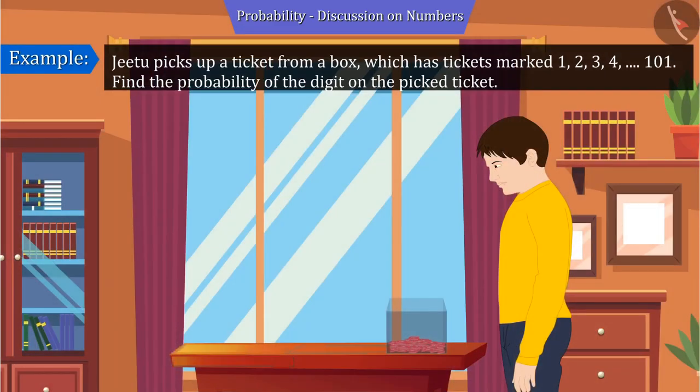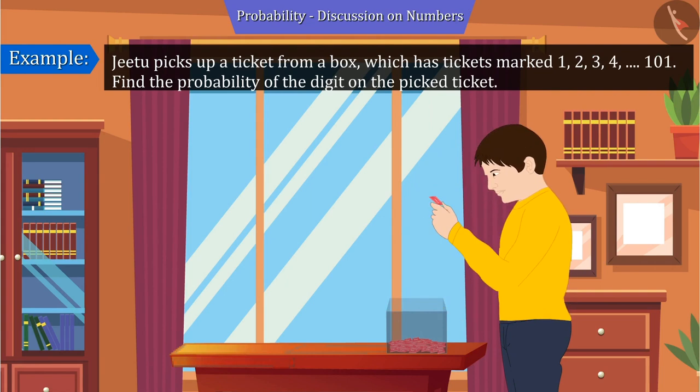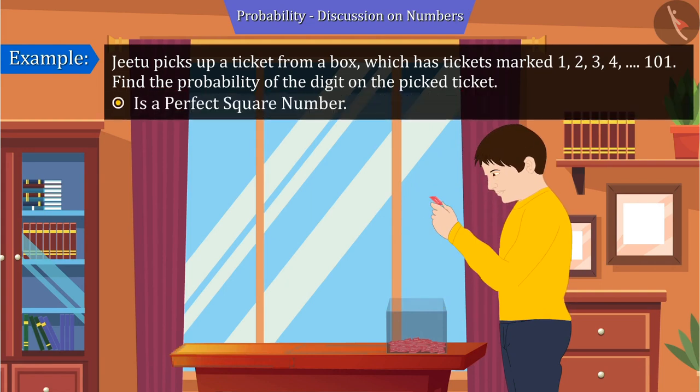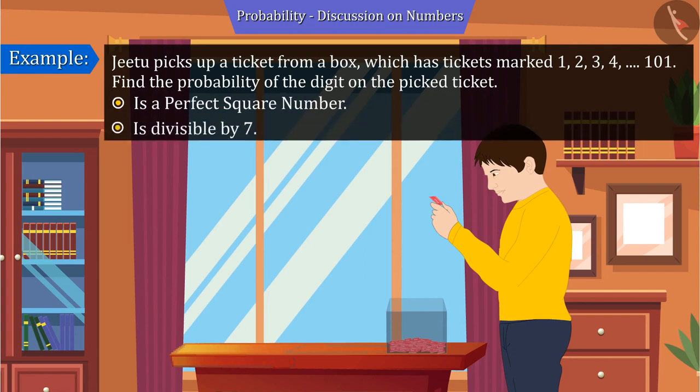Jitu picks up a ticket from a box which has tickets marked 1 to 101. Find the probability that the digit on the picked ticket is a perfect square number and is divisible by 7. Let's see.